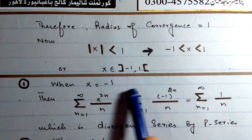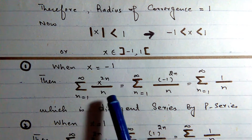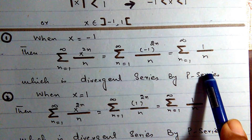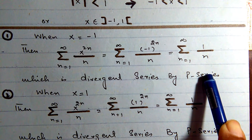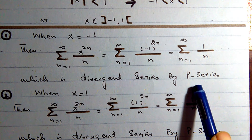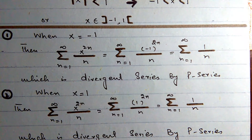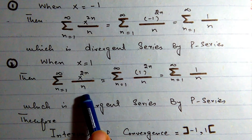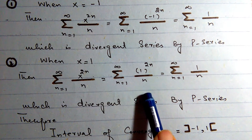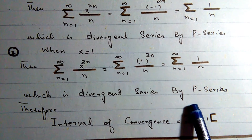We check the endpoints. At x = -1 and x = 1, the series reduces to summation 1/n, which is the harmonic series, divergent by the p-series test since p = 1 is not greater than 1.